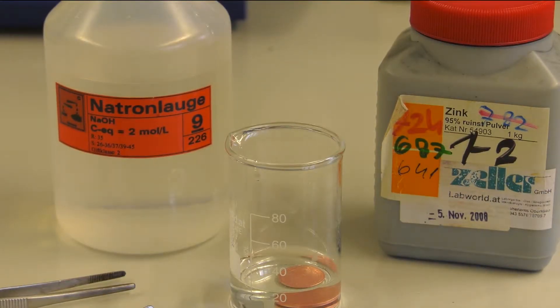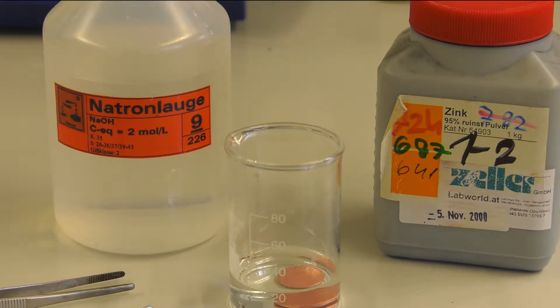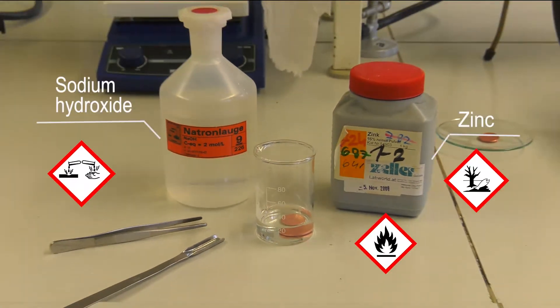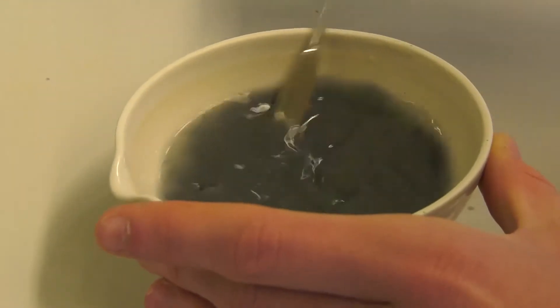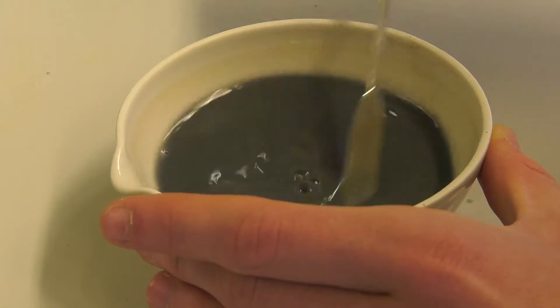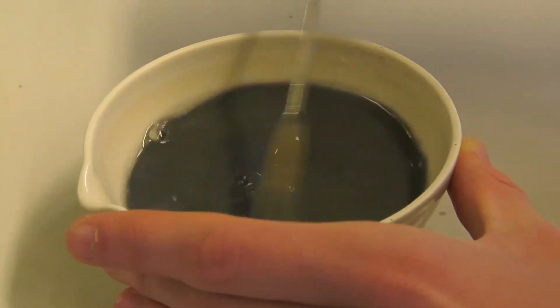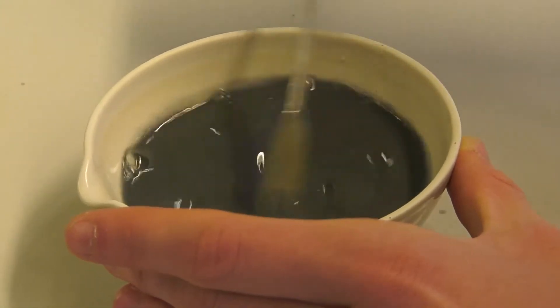Please consider the guidelines concerning the waste disposal, which are shown at the end of the video. For the golden coin experiment, you firstly have to dissolve 4g of sodium hydroxide in 50ml of water in a 100ml beaker.